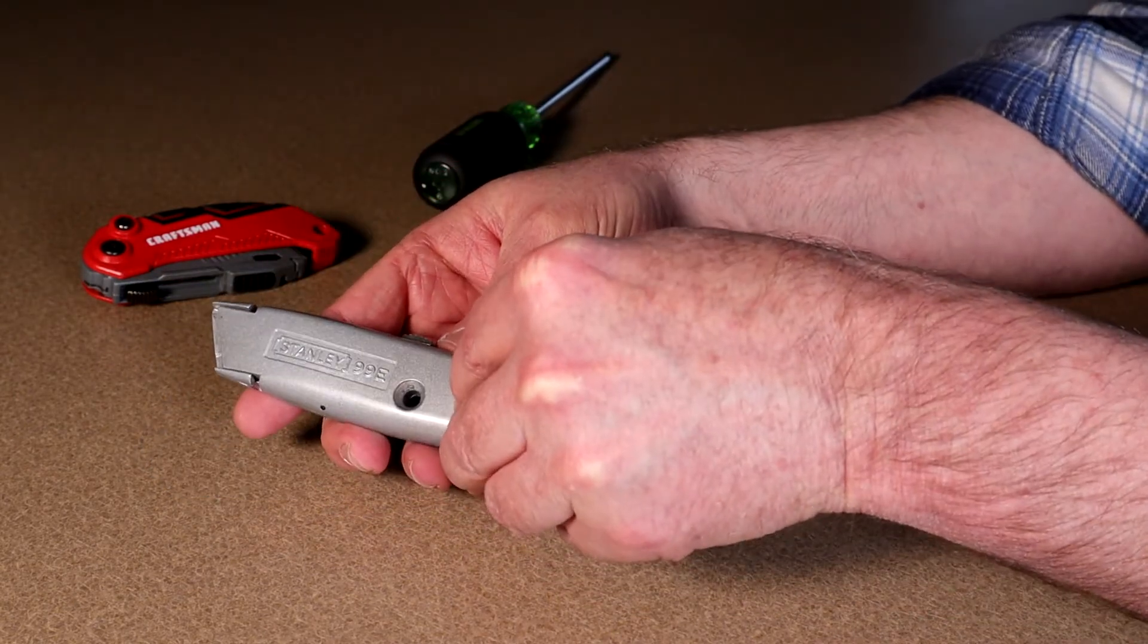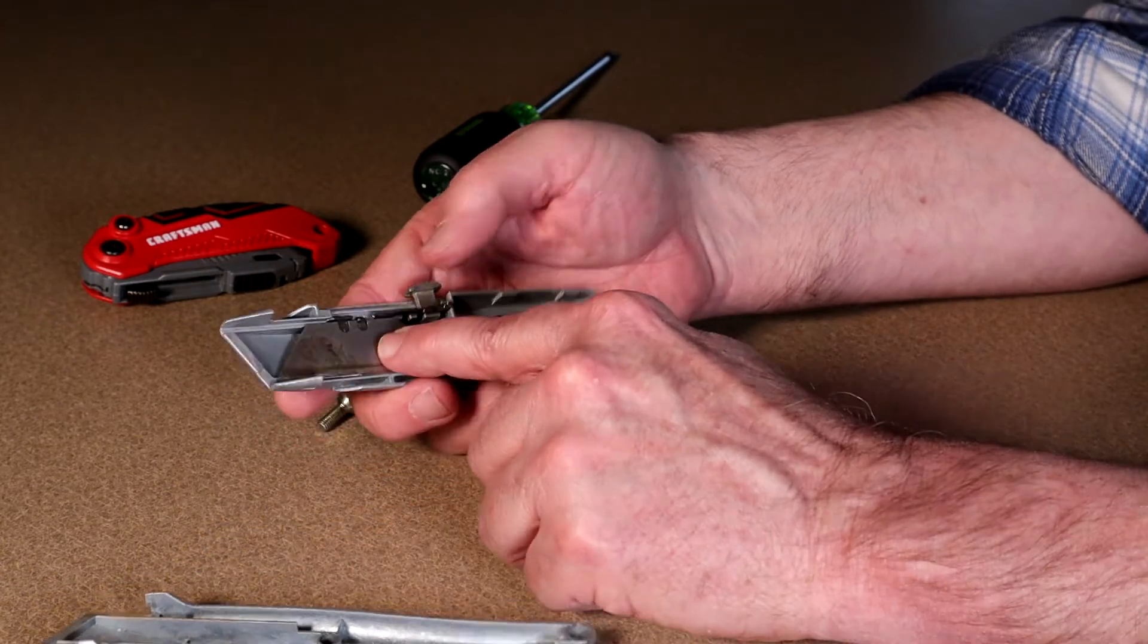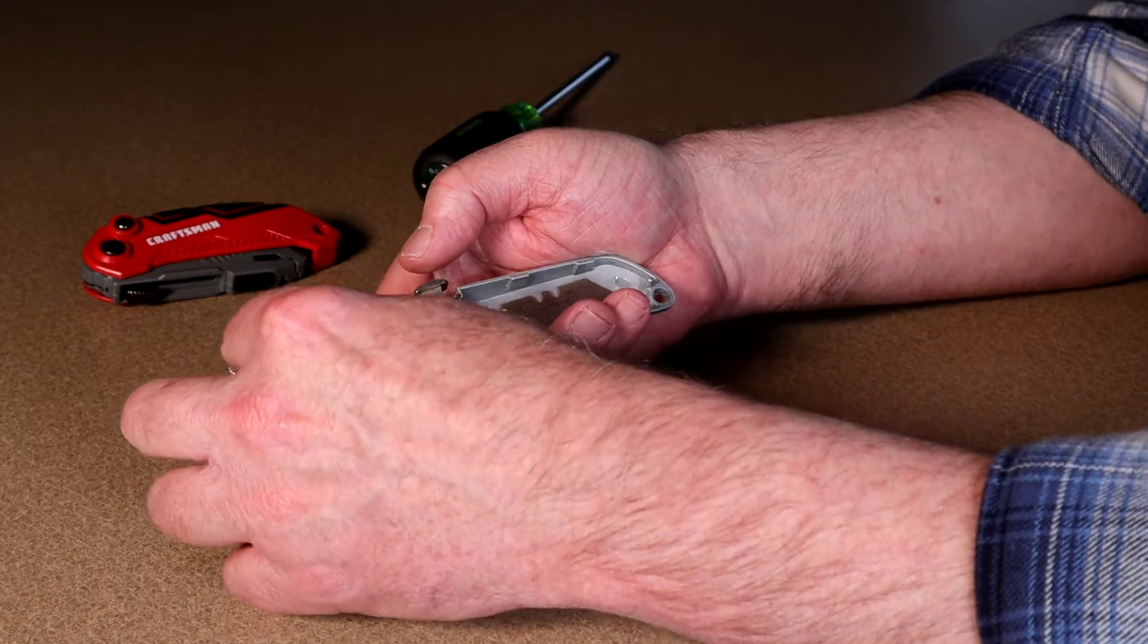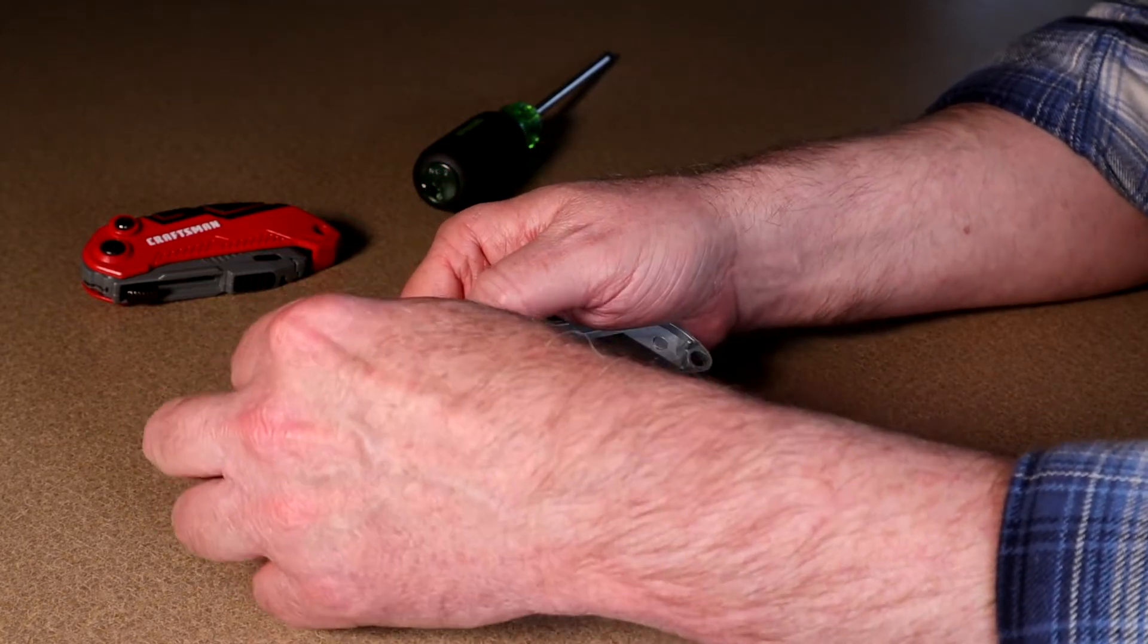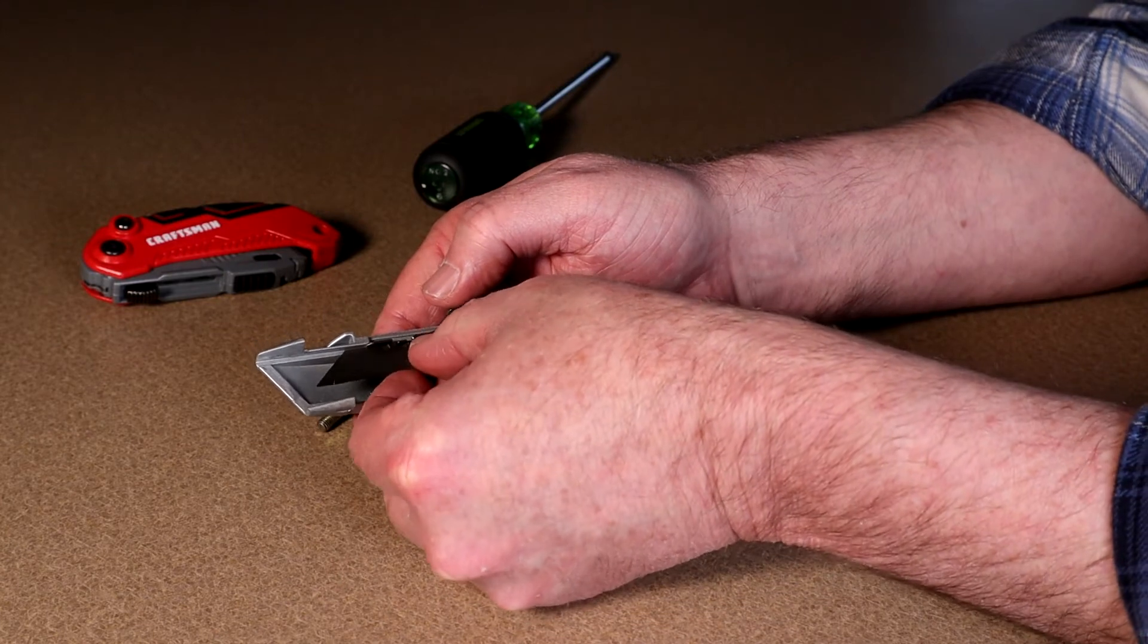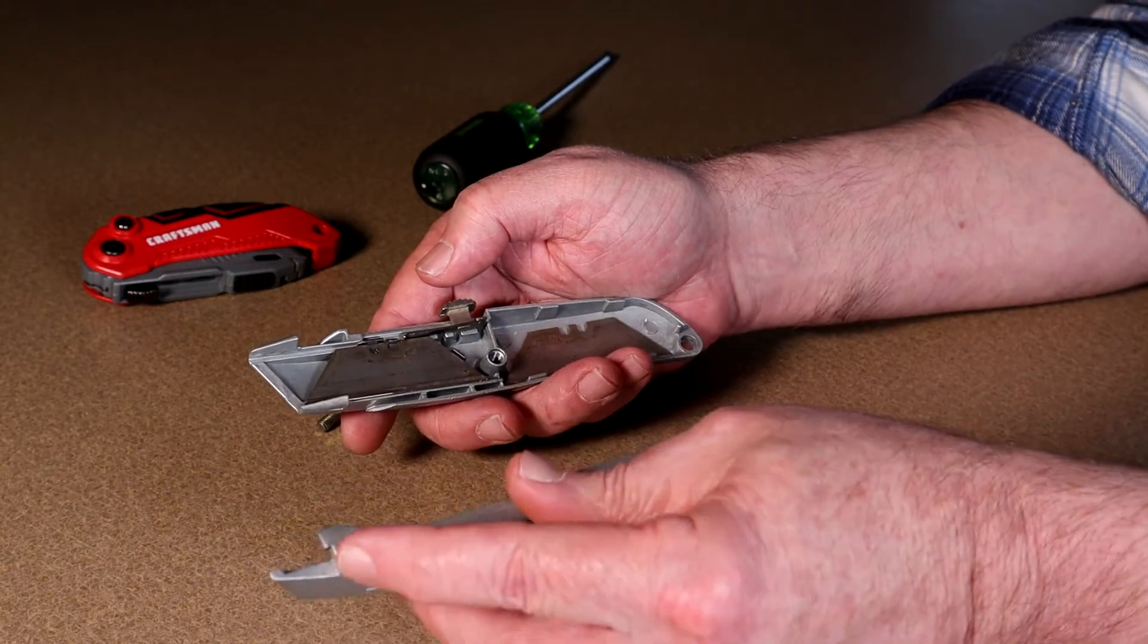And you lift the top half off. Here is the whole mechanism which extends the blade. You just lift the blade up like this, flip it over, sit it right back in like that, put the two halves back.